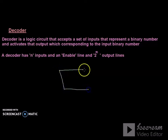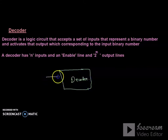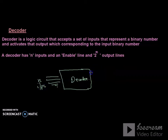A decoder is a logic circuit. How many inputs are there? There are n inputs, 2-raised-to-n outputs, and one enable line.